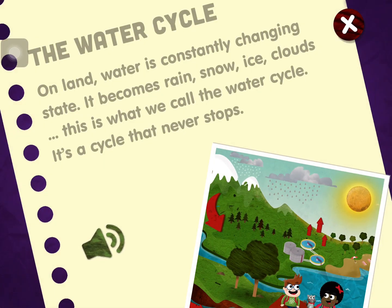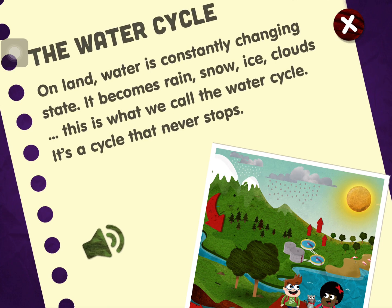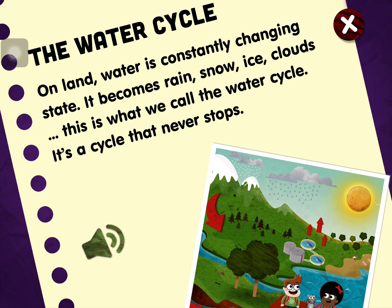The Water Cycle. On land, water is constantly changing state. It becomes rain, snow, ice, clouds. This is what we call the Water Cycle. It's a cycle that never stops.